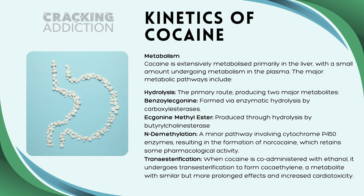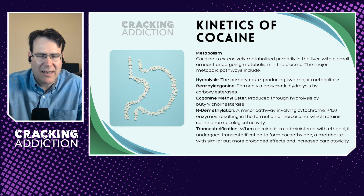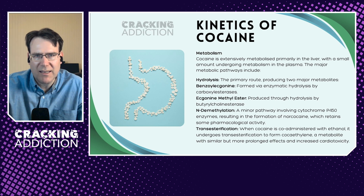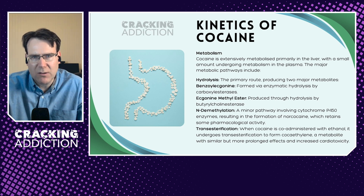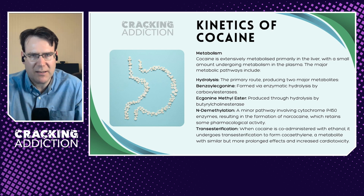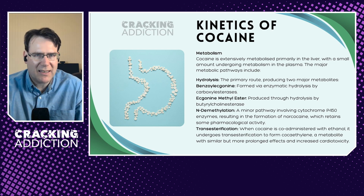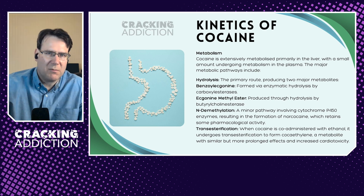Benzoylecgonine is formed via enzymatic hydrolysis by carboxylesterases (CES1). And ecgonine methyl ester — otherwise known as methyl ecgonine — is produced through hydrolysis by the enzyme butyrylcholinesterase. So effectively we have two hydrolysis pathways: carboxylesterase produces benzoylecgonine, and butyrylcholinesterase produces ecgonine methyl ester.